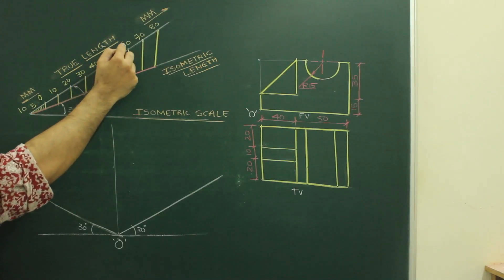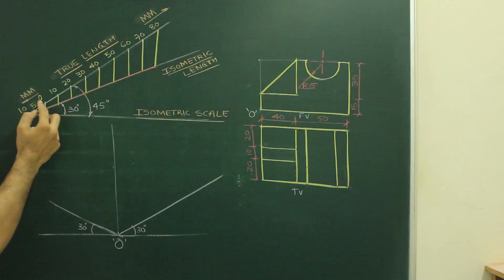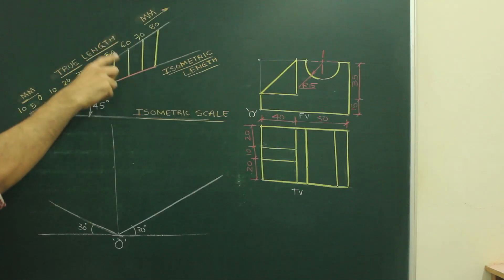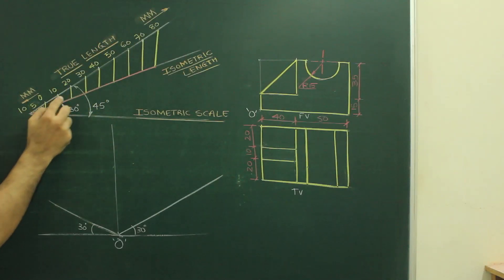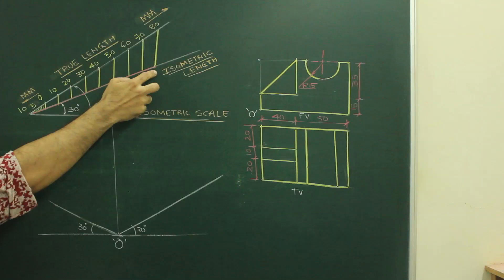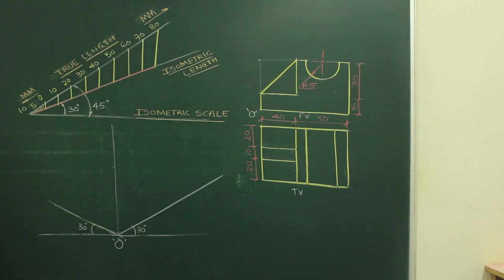So we need to mark 0, 10, 20, 30, 40, 50, 60, 70, 80 mm. And we will take 10 mm on the left side. So we will mark true length like that. And then we will draw a straight line. So wherever we will get on 30 degree line, so that length will be isometric length.